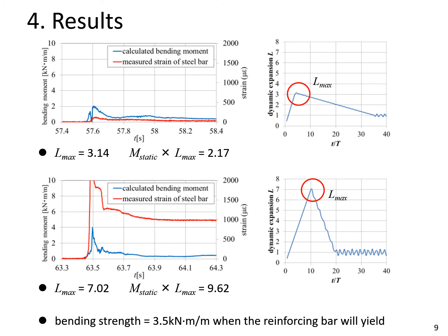The strain was measured in rebar at 0.5 meters from the top. The only difference between the upper and lower figure is the situation of collision, for example, wave breaker type. However, only in the lower figure, residual strain occurred. From the upper figure, the maximum dynamic expansion Lmax is 3.14 and M static times Lmax is 2.17 kNm per meter.